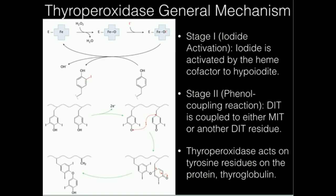Now we're going to look more at the mechanism. In stage one — iodide activation — iodide is activated by the heme cofactor to hypoiodite, shown on the right side. The heme iron initially binds hydrogen peroxide. The Fe³⁺ donates two electrons to the nearby oxygen, ejecting water and generating an iron-oxo species. The iodide then attacks this oxygen, putting electrons back onto the iron in the 3+ state, generating the hypoiodite species.